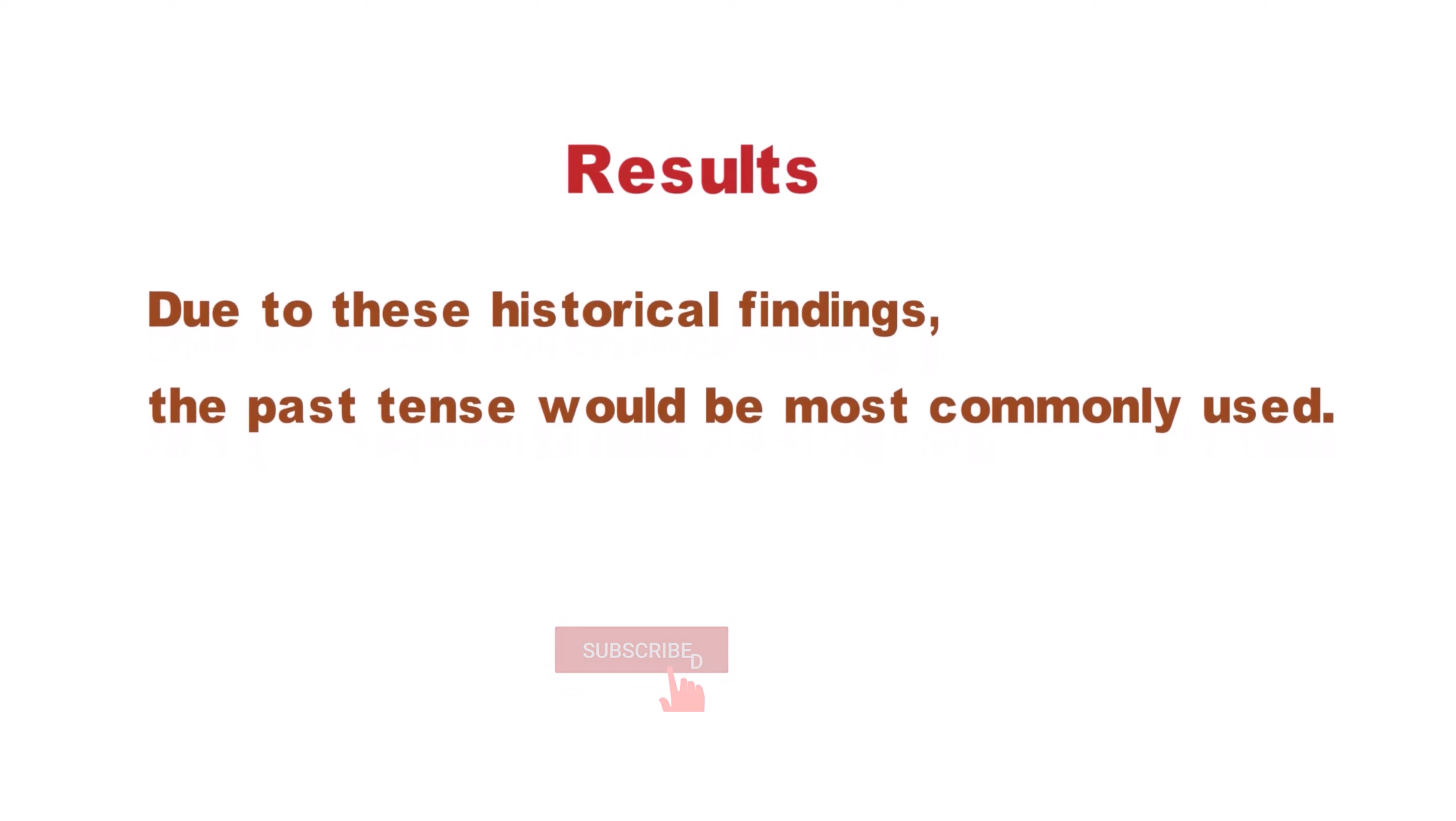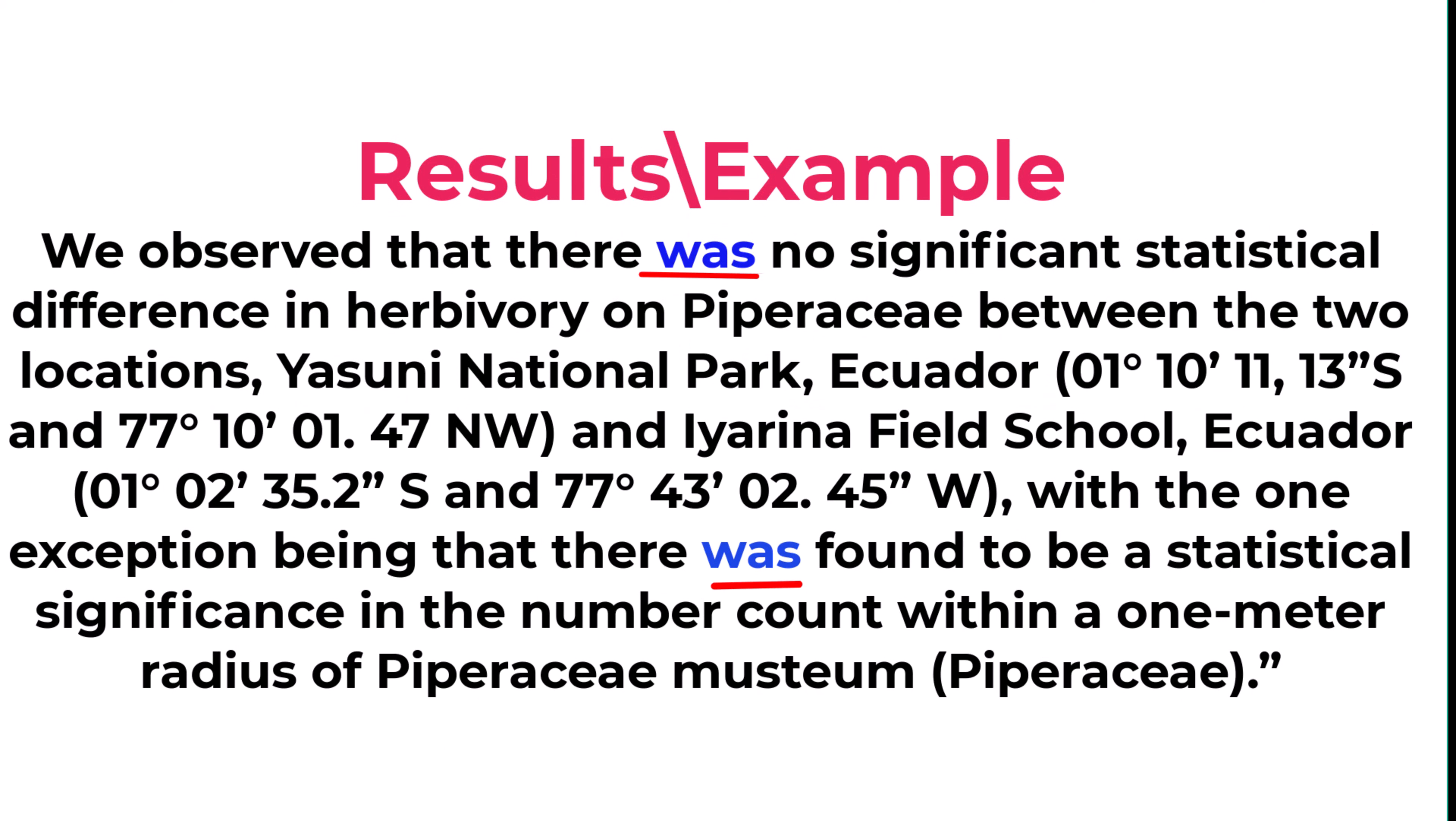Next, results. The results follow a similar verb tense rule as the method section. Past tense should be used. Simple present tense should be used to explain diagrams, figures, and tables. For example, we observed that there was no significant statistical difference in herbivory on Piperaceae between the two locations: Yasuni National Park, Ecuador, 01 degree 10 feet 11.13 inches S and 77 degrees 10, 147 Northwest, and Iarena Field School, Ecuador, 01 degree 02, 35.2 S and 77 degrees 43, 245 W.